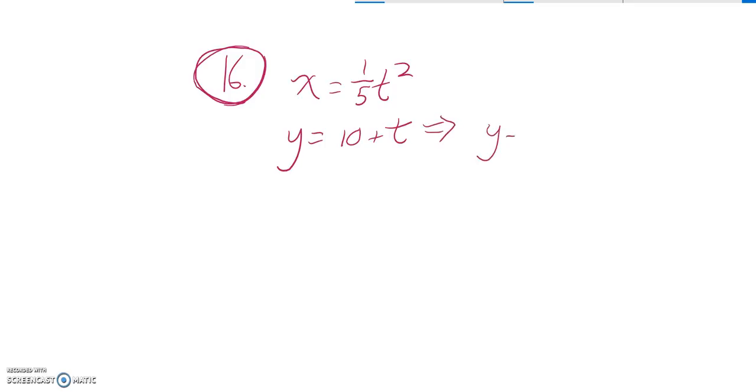So subtract 10 from both sides. I get that, minus 10, minus 10. And so now I know what T is, and T is in terms of Y.